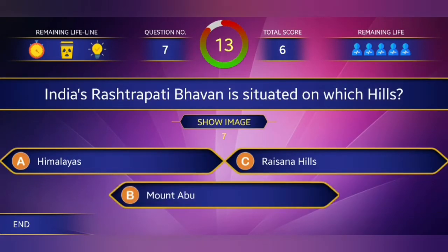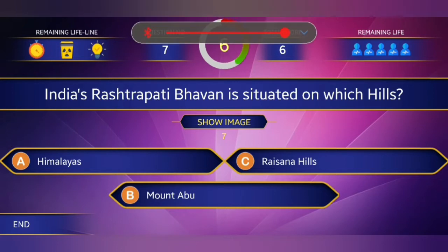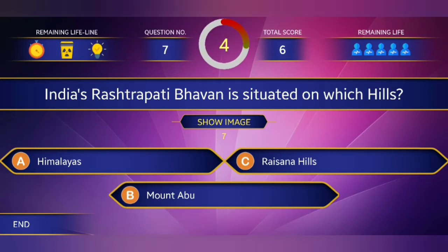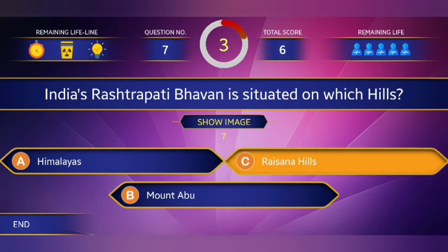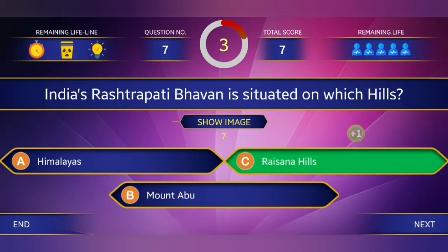Question number seven: India's Rashtrapati Bhavan is situated on which hills? The answer is Raisina Hills.